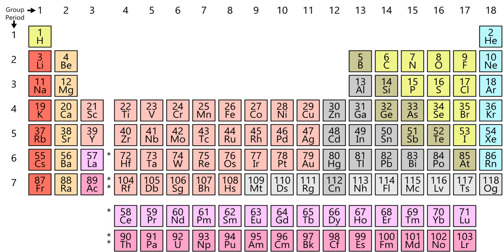Six groups have accepted names as well as assigned numbers; for example, group 17 elements are the halogens, and group 18 are the noble gases. Also displayed are four simple rectangular areas or blocks associated with the filling of different atomic orbitals. The organization of the periodic table can be used to derive relationships between the various element properties, and also the predicted chemical properties and behaviors of undiscovered or newly synthesized elements.